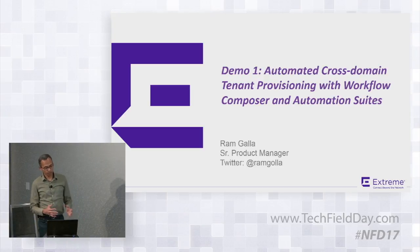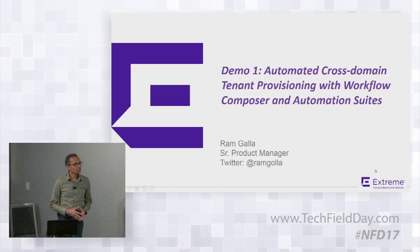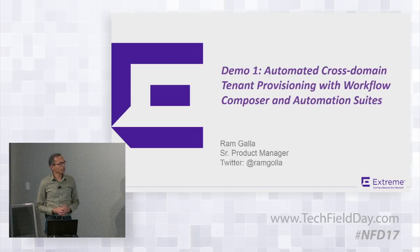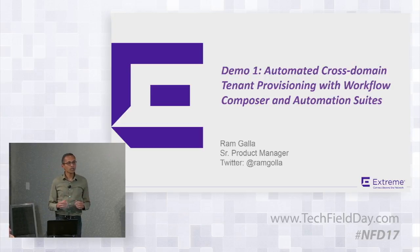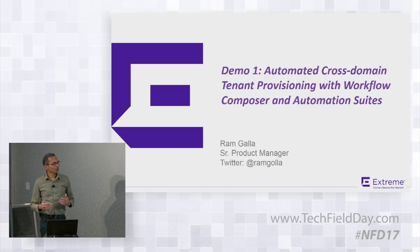Initially, when Brocade acquired StackStorm, it was cross-domain, but there was no networking part of it. The network domain is what we developed within Brocade and now Xtreme. That's called automation suites. Automation suites include two: one is Network Essentials, which includes basic building blocks for network automation — nuts and bolts, like Lego blocks you can use as part of a workflow.